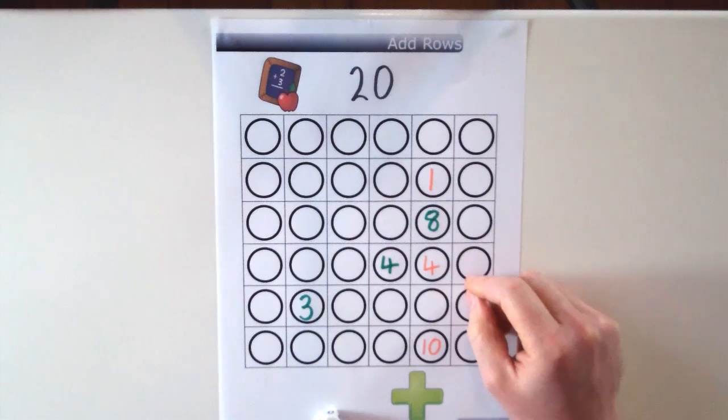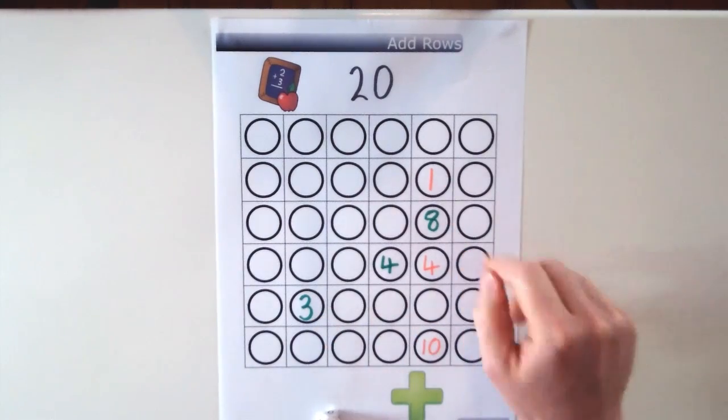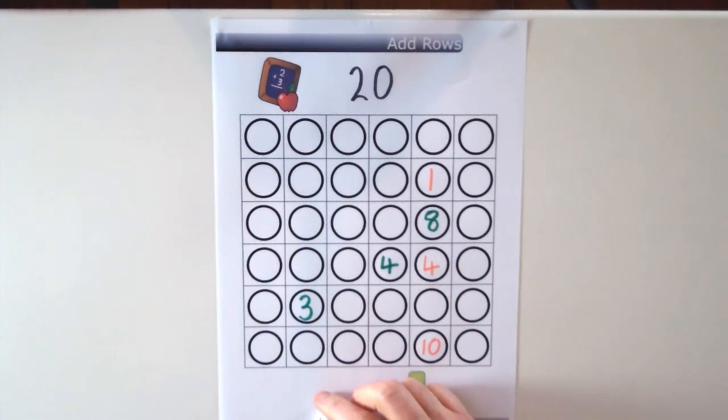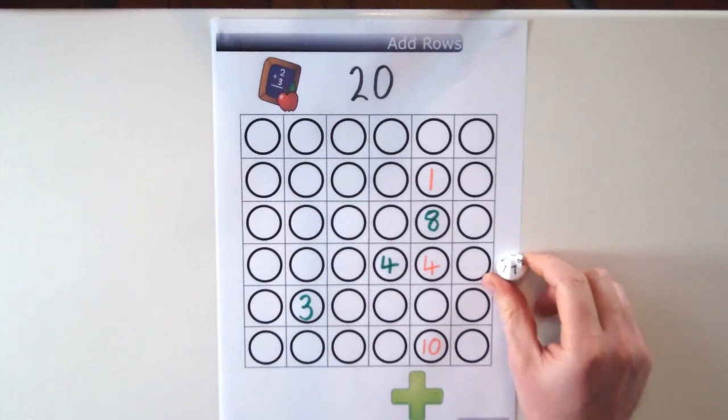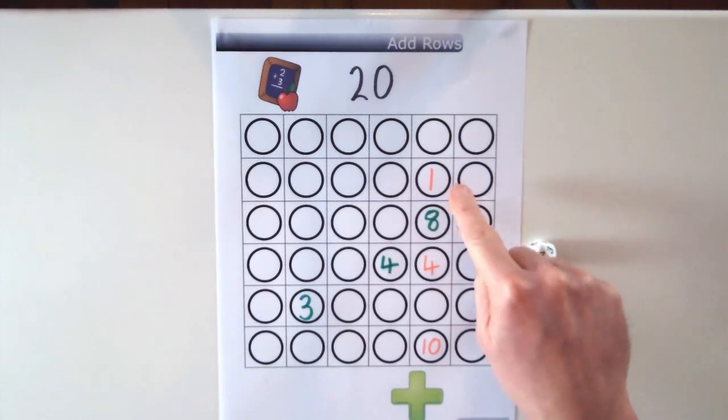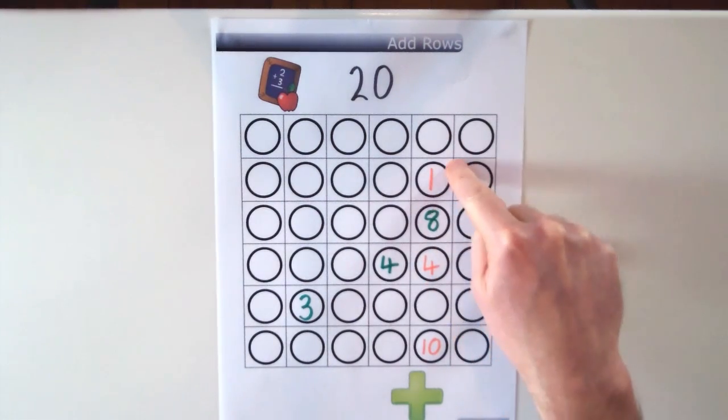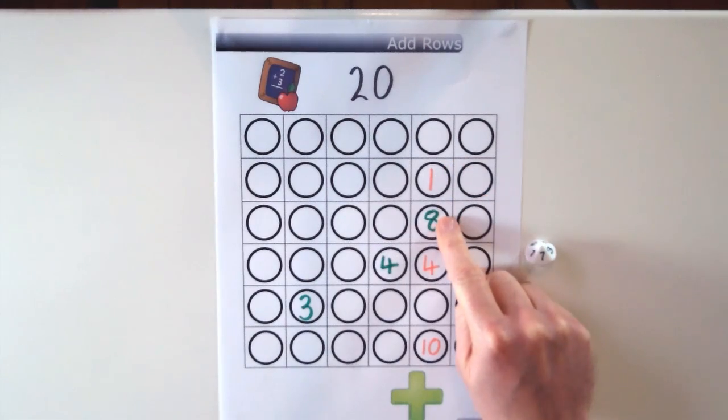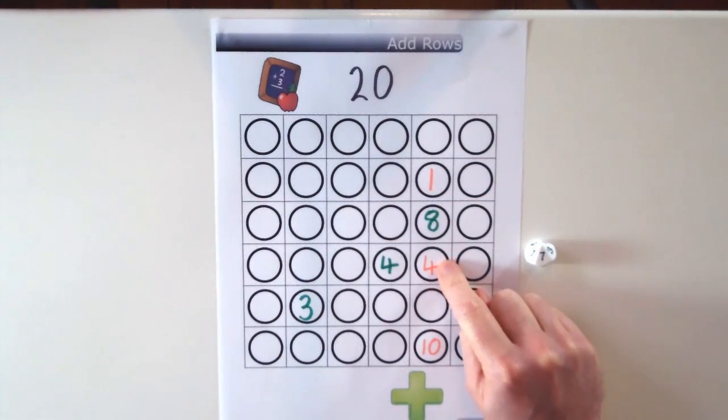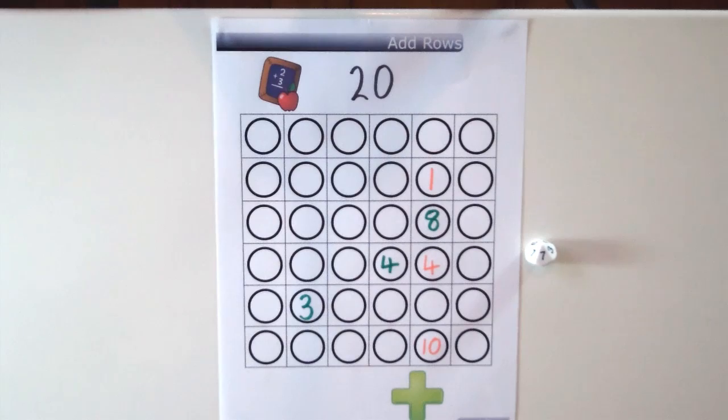Now both players have rolled a few times and put numbers in different circles and the orange player has just rolled a 7. And if you look here you can see we've got a row of numbers 8 plus 4 equals 12 plus 1 equals 13.